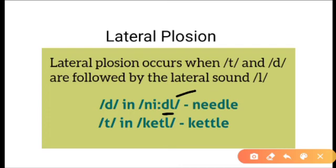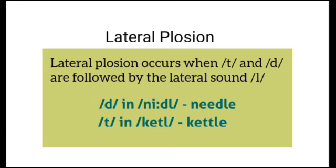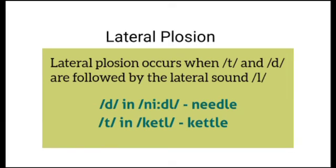In 'needle,' the plosive is not fully articulated as a plosive — instead it takes on a lateral quality. Another example is 't' in 'kettle' — 'kettle' is followed by the lateral 'l,' so it is articulated with lateral quality. That means the center part of the mouth is blocked by the tongue and the air passes through the sides of the tongue. This is how lateral plosives are articulated — they occur when 't' and 'd' are followed by the lateral sound 'l.'